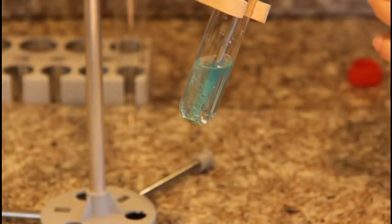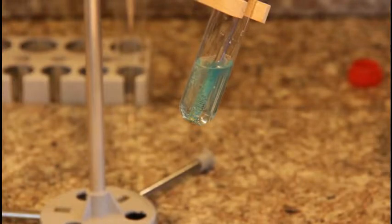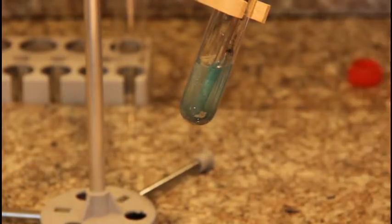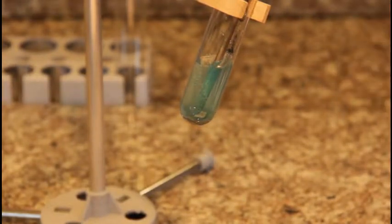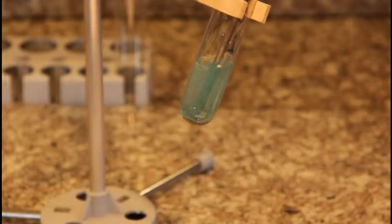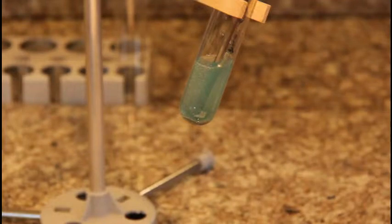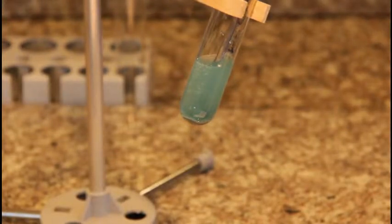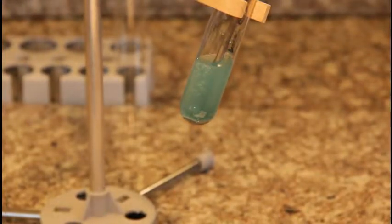I am now going to add 1 small spoonful of iron filings. Now, these iron filings are very, very tiny. These are the little pieces on the side of the test tube, and these are in the middle. They're so small, the reaction happens much faster.